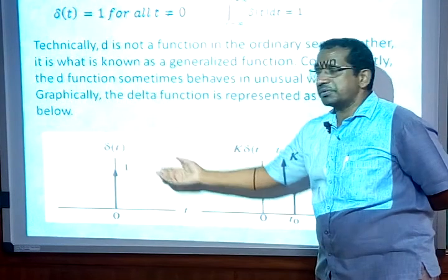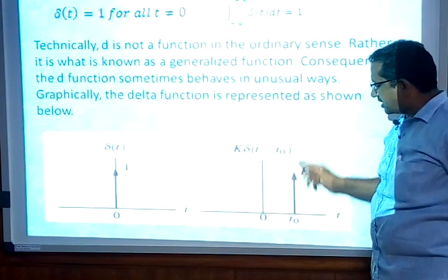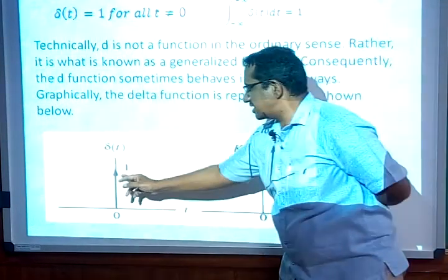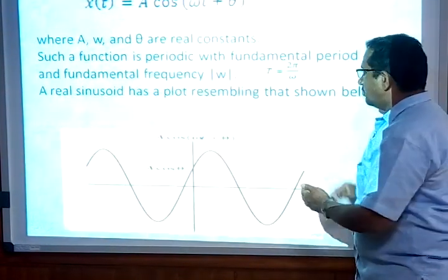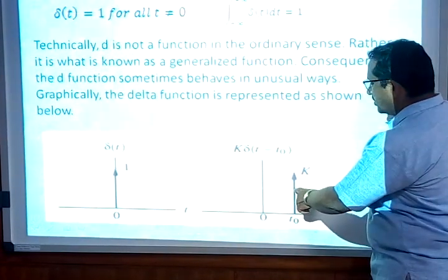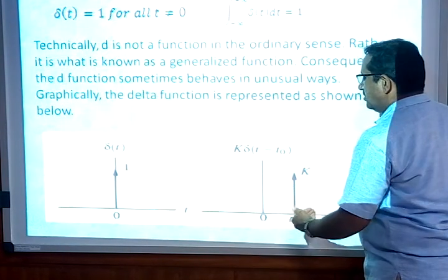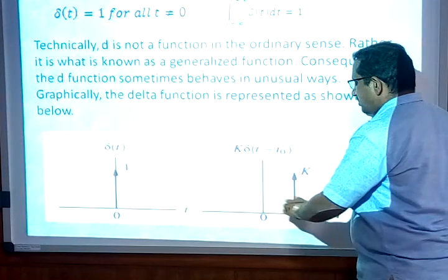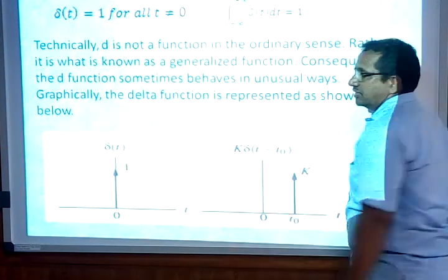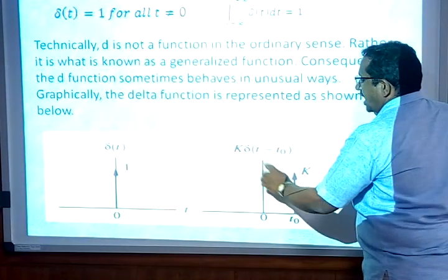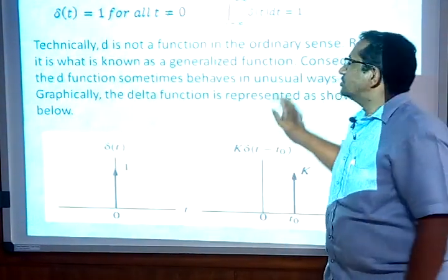The impulse signal can also be represented as a delayed version with respect to time period. An impulse signal with strength k delayed with respect to 0 is written as delta of t minus t-naught. If the signal comes prior to 0, that is time advancement, it is placed to the left side of 0 and written as delta of t plus t-naught.